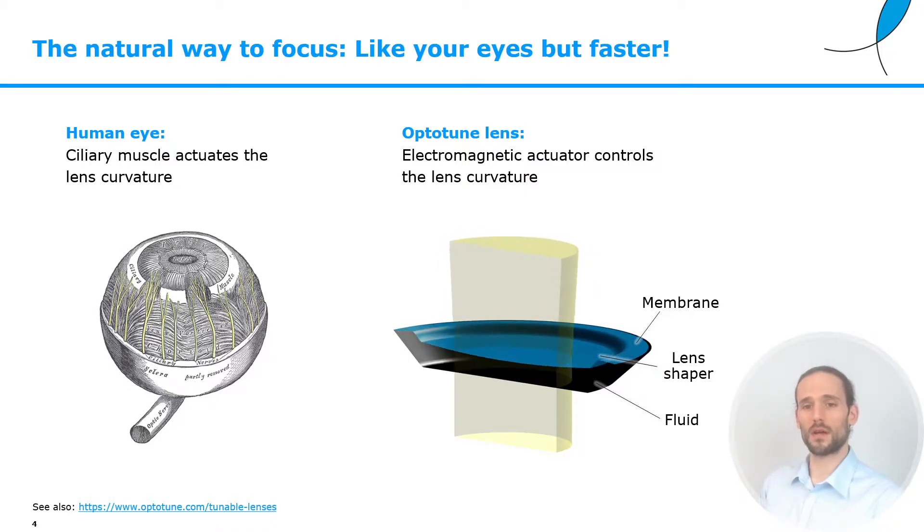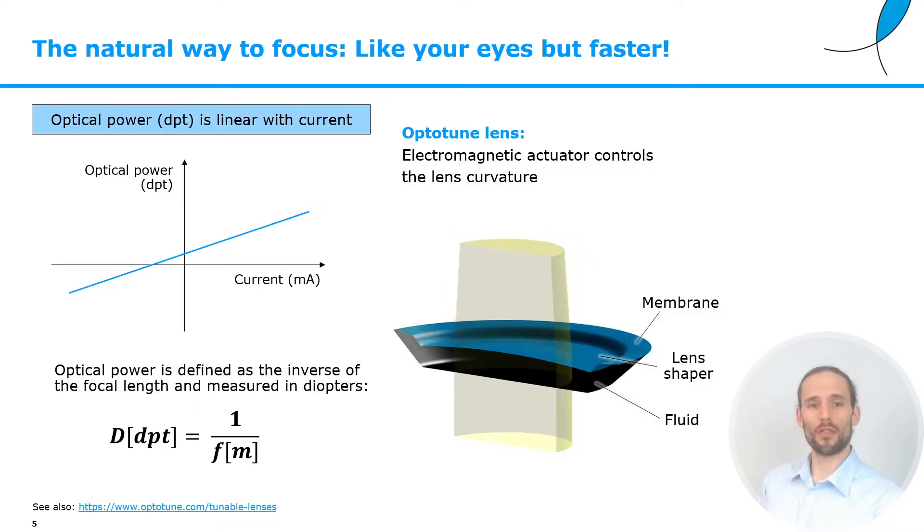The main components of the lens are basically three. We have a container filled with an optical fluid and sealed with an elastic membrane. On top of this elastic membrane is glued a lens shaper, which is moved up and down by a voice coil actuator. These up and down movements, which happen very fast within milliseconds, change the shape of the lens. Another remarkable thing is that the optical power of the lens is linearly dependent on the current that is applied to the voice coil, making the device very straightforward and intuitive to use.